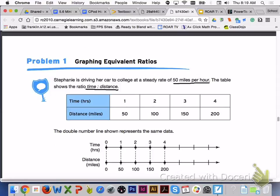Turn to page 354, problem 1, graphing equivalent ratios. Stephanie is driving her car to college at a steady rate of 50 miles per hour. The table shows the ratio of time to distance. The double number line shown represents the same data. Using the ratios given in the table and the ratios on the double number line, please determine the remaining three ratios on the double number line with your group members.